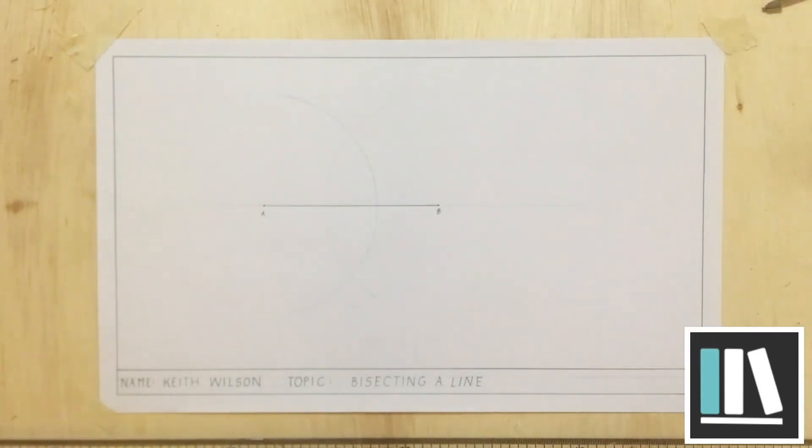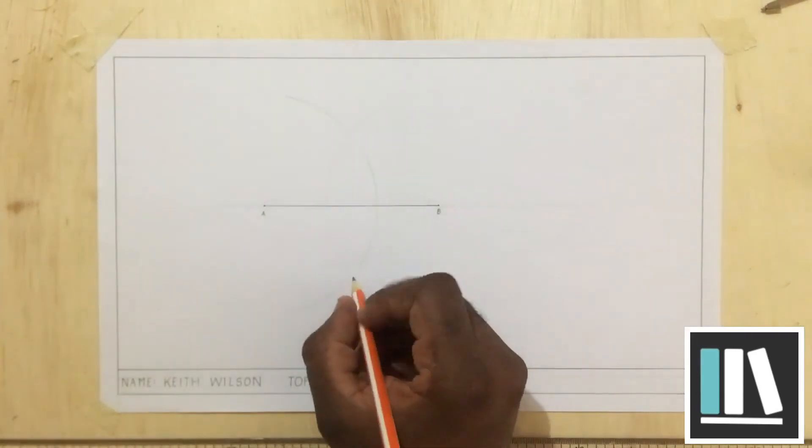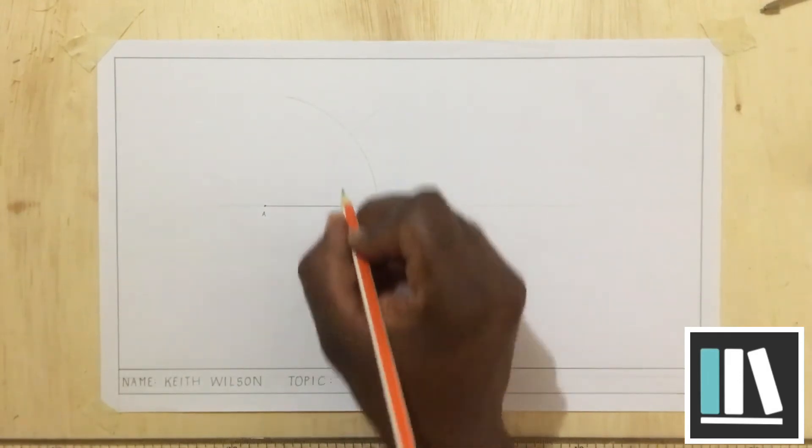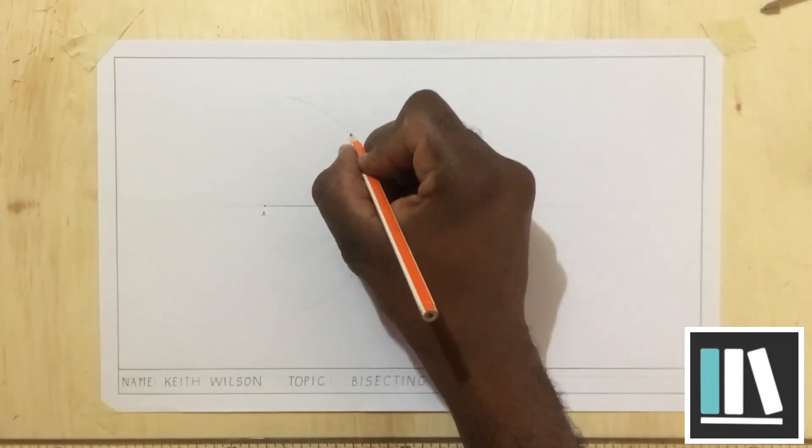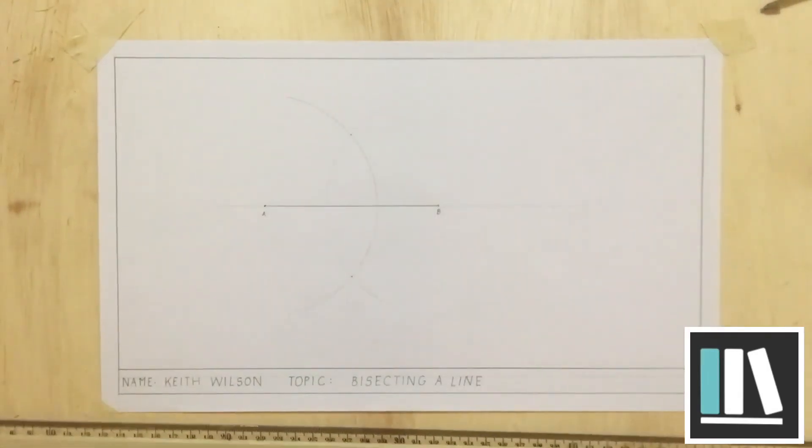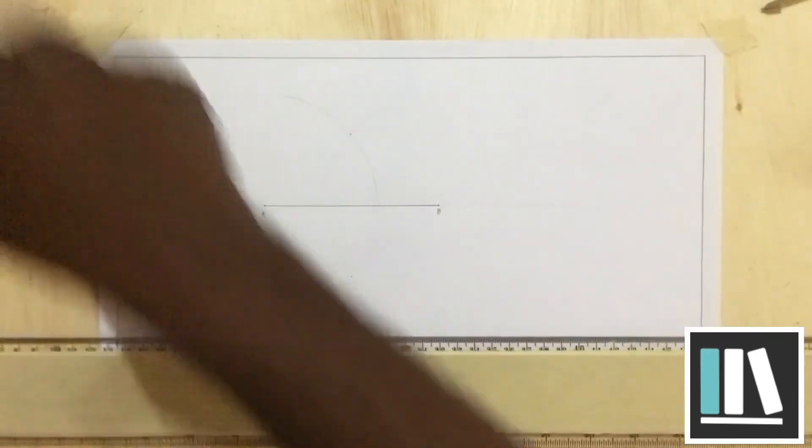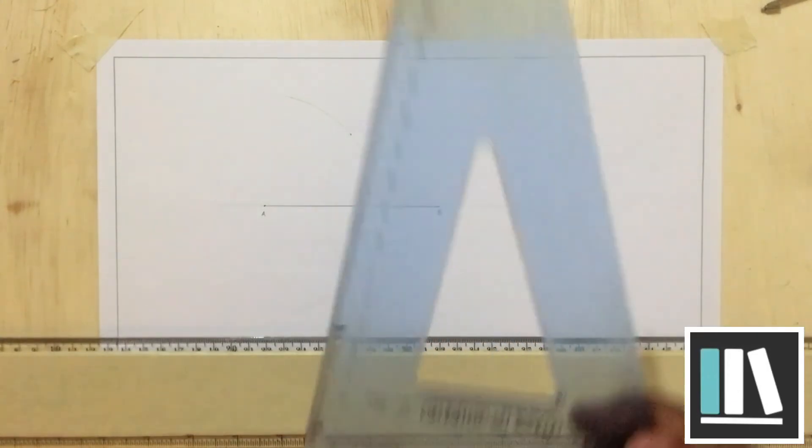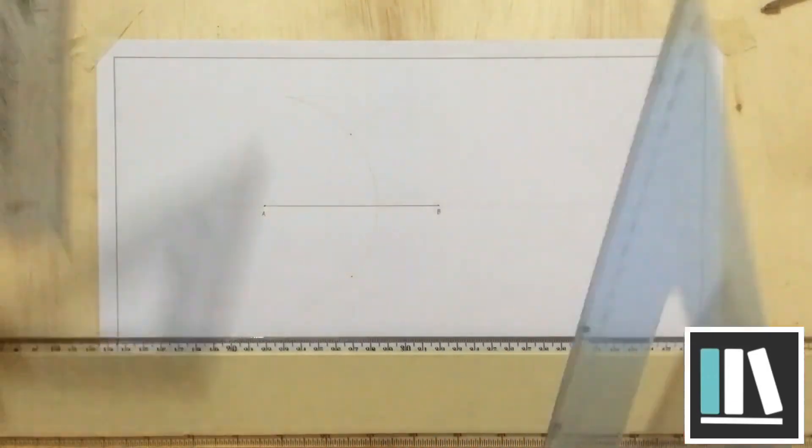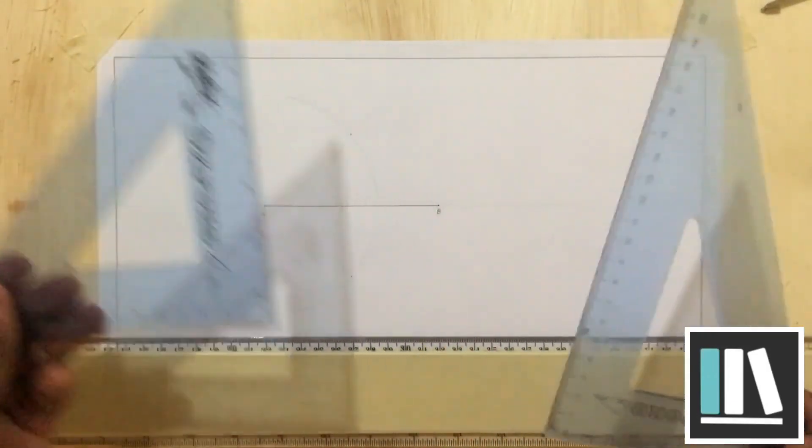Once you have those intersections, you will now get two more points. You can just brighten them if you wish. Once you get those points, you are going to take your set square. This can be done using any of these set squares. My preference is the 30-60 degree set square.